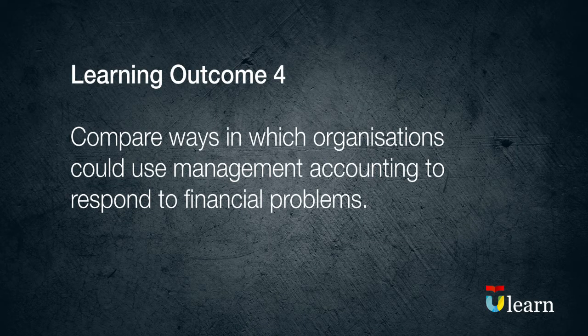Learning outcome 4 compares ways in which organisations could use management accounting to respond to financial problems. How might you identify potential financial problems, and what role does financial governance play? Learning outcome 4 also considers what makes a good management accountant — what skill set do you need, particularly in difficult times, and what strategies and systems might a management accountant and their company develop if they do encounter financial problems?